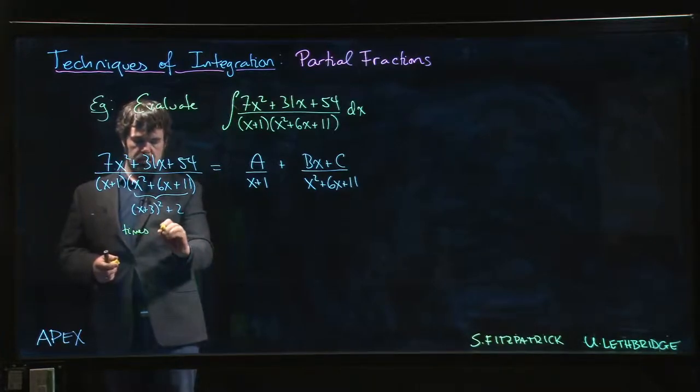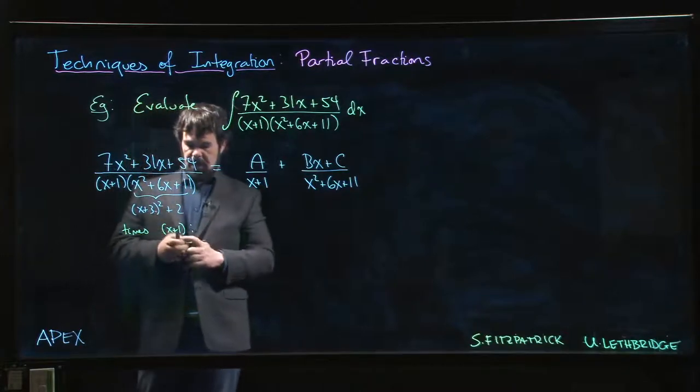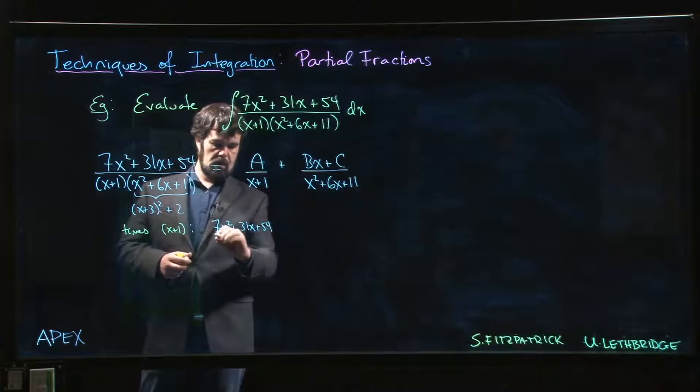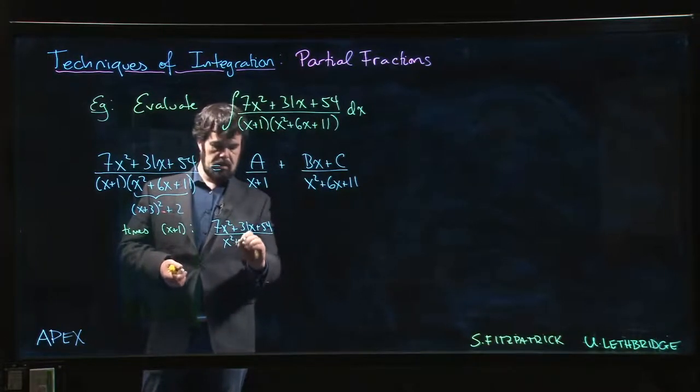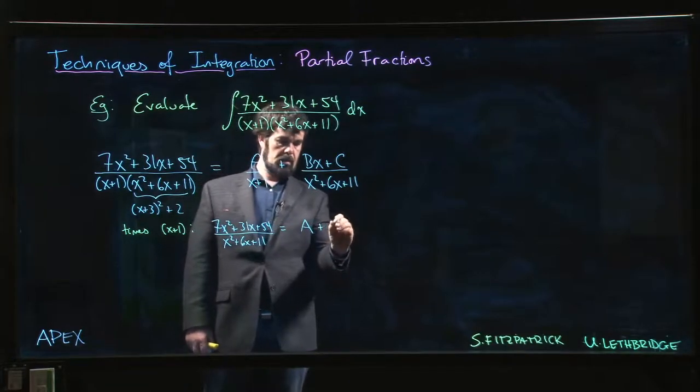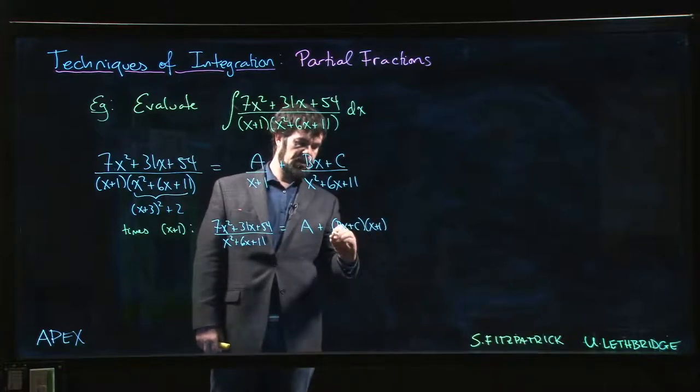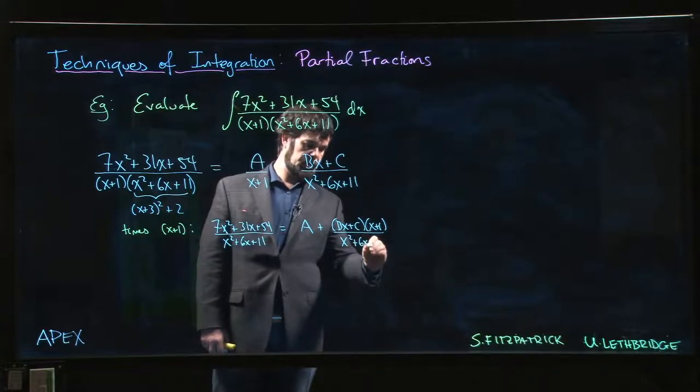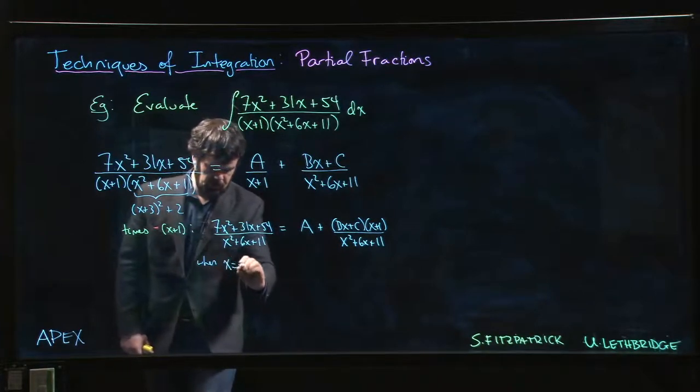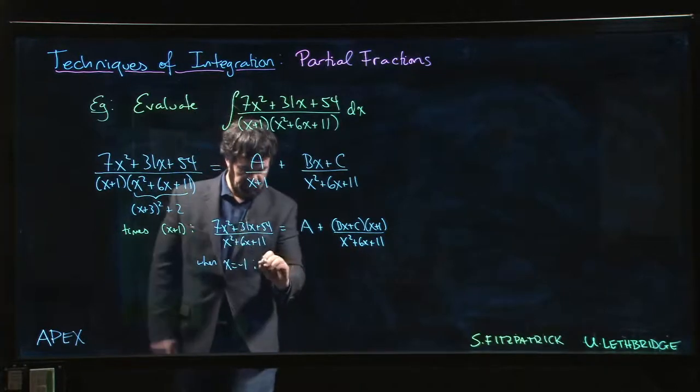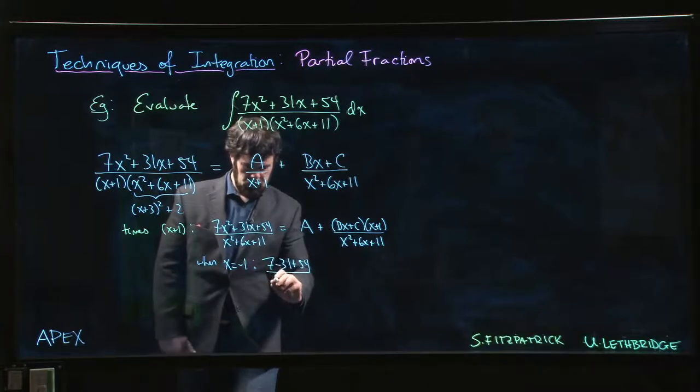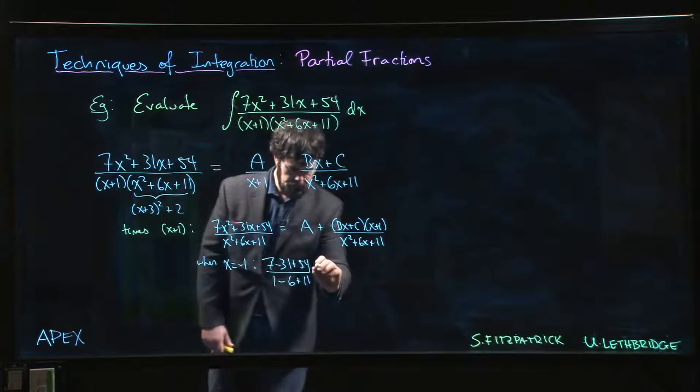So if we multiply both sides by x plus 1, we're going to get 7x squared plus 31x plus 54 over x squared plus 6x plus 11. That's going to be equal to A plus Bx plus C times x plus 1 over x squared plus 6x plus 11. And so when x equals minus 1, then we do get a number out. We get 7 minus 31 plus 54 over 1 minus 6 plus 11 equals A.